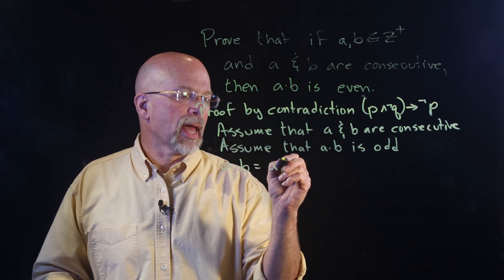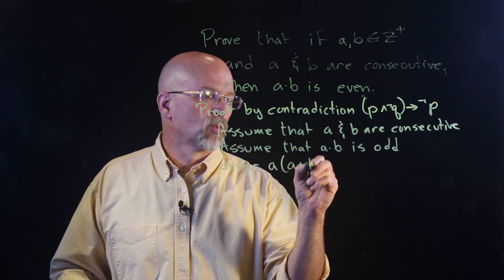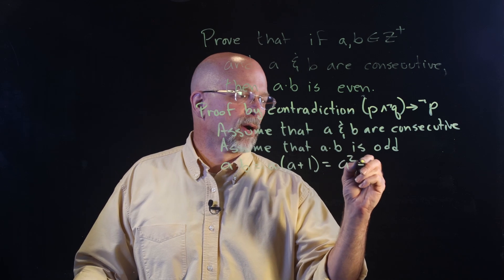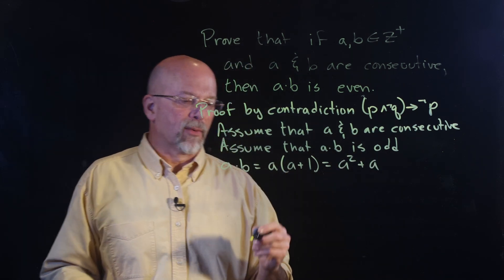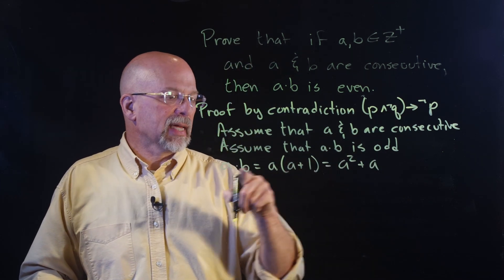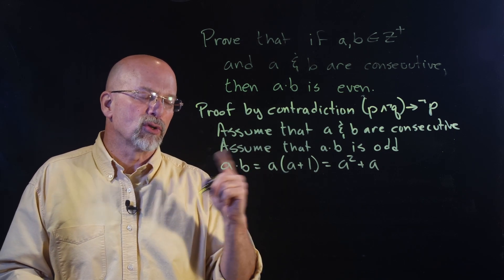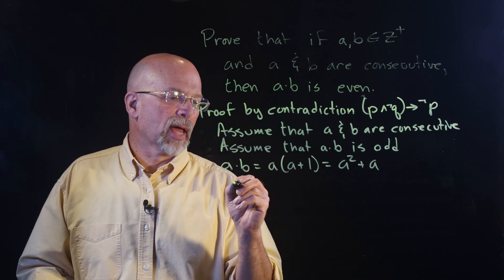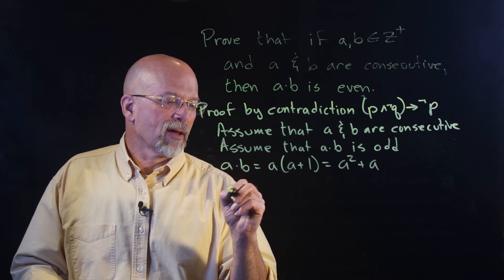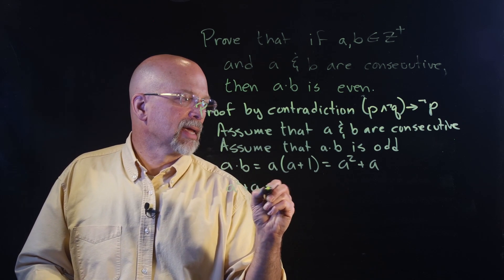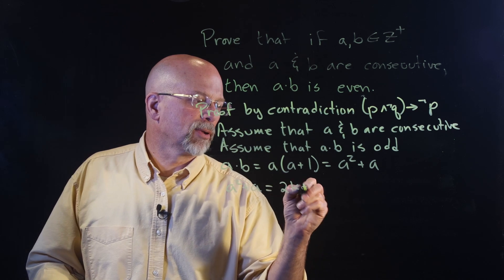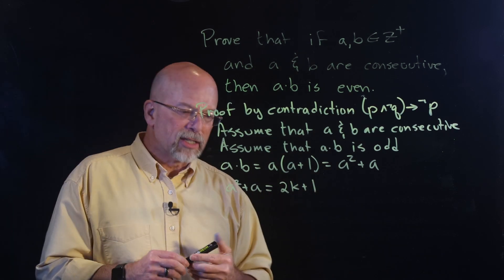So, a times b is equal to a times a plus one, which is equal to a squared plus a. We've already done that, right? Now, since a times b is odd, then we know that there's an integer k such that 2k plus one is equal to a times b. So, we have a squared plus a is equal to 2k plus one for some integer k.